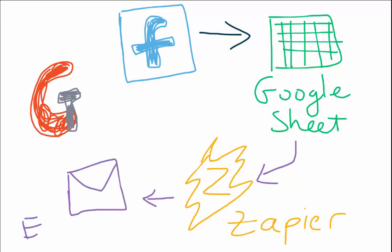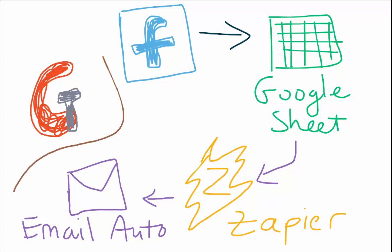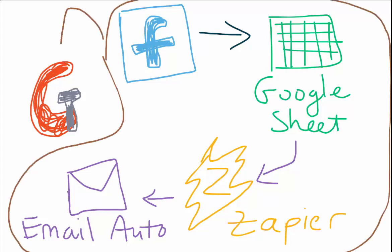Zapier will actually pull the data from the Google Sheet into your email autoresponder. And all of this is done through a Google Chrome extension, so it sits on your browser.